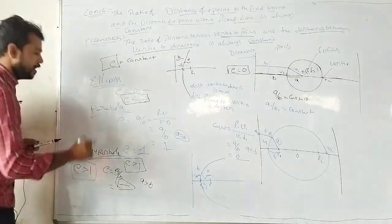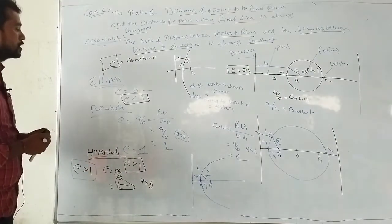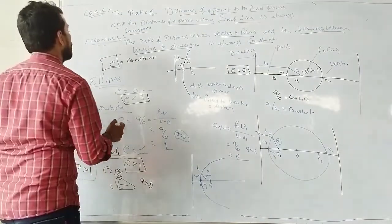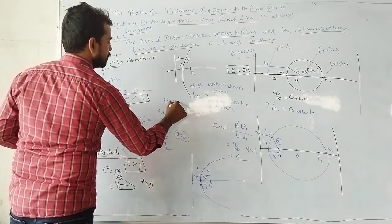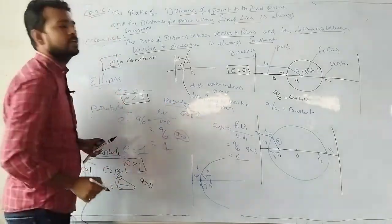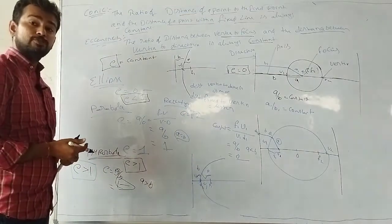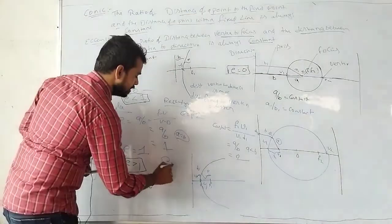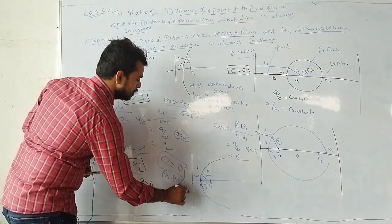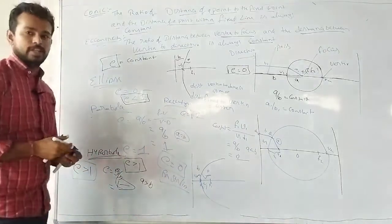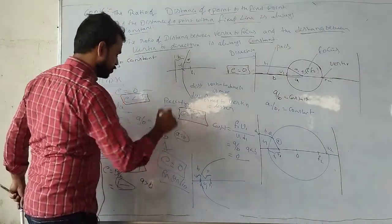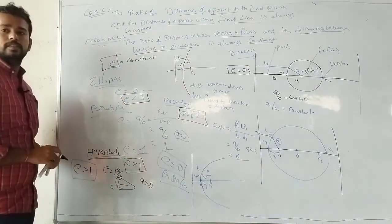For rectangular hyperbola, E is equal to root 2. For a straight line, E is equal to 0. So: E equals root 2 for rectangular hyperbola, E equals 0 for straight line. All these statements are exam questions.